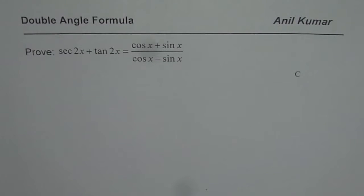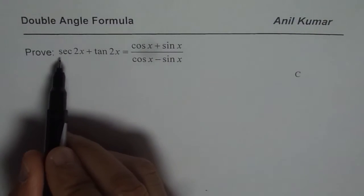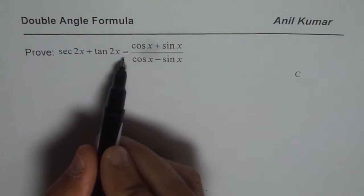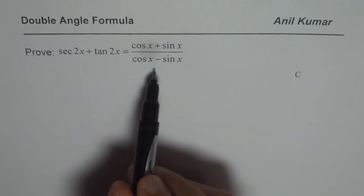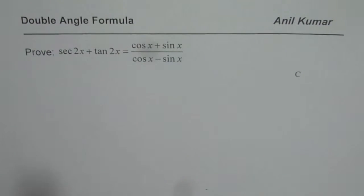I'm Anil Kumar and here is a trigonometric identity with double angles. Let us see how to prove it. We need to prove that secant 2x plus tan 2x equals cos x plus sin x divided by cos x minus sin x.